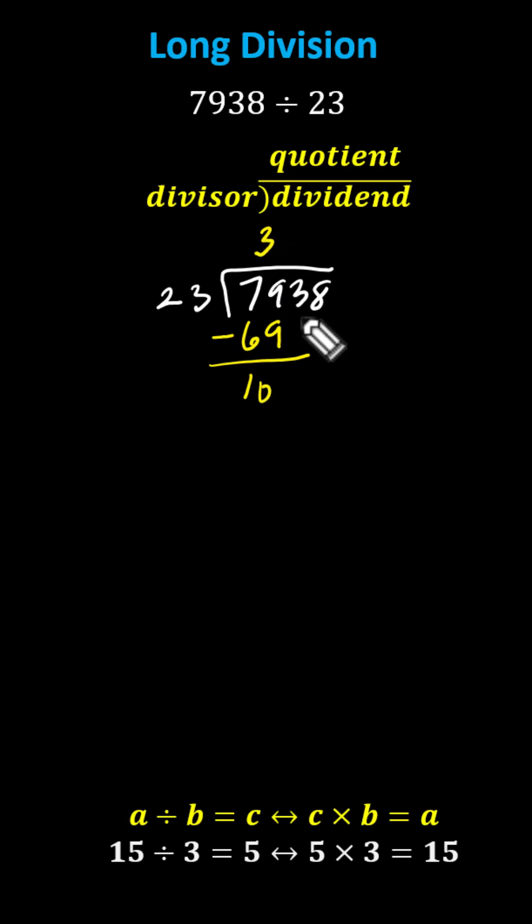We now bring down the next digit in the dividend, which is the three. And now we determine how many 23s there are in 103. Let's try four. I'm trying four because 23 is close to 25, and 103 is close to 100. I know there are four 25s in 100.